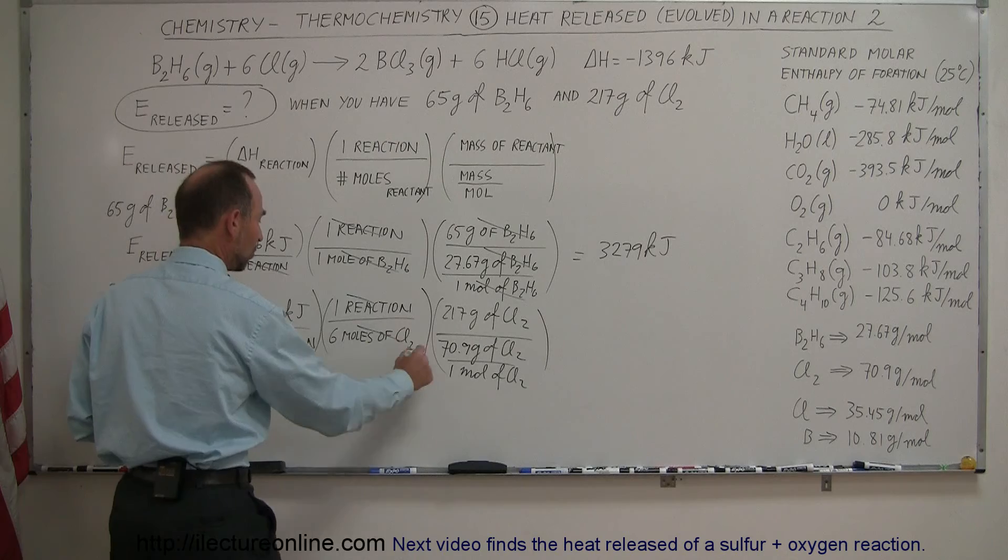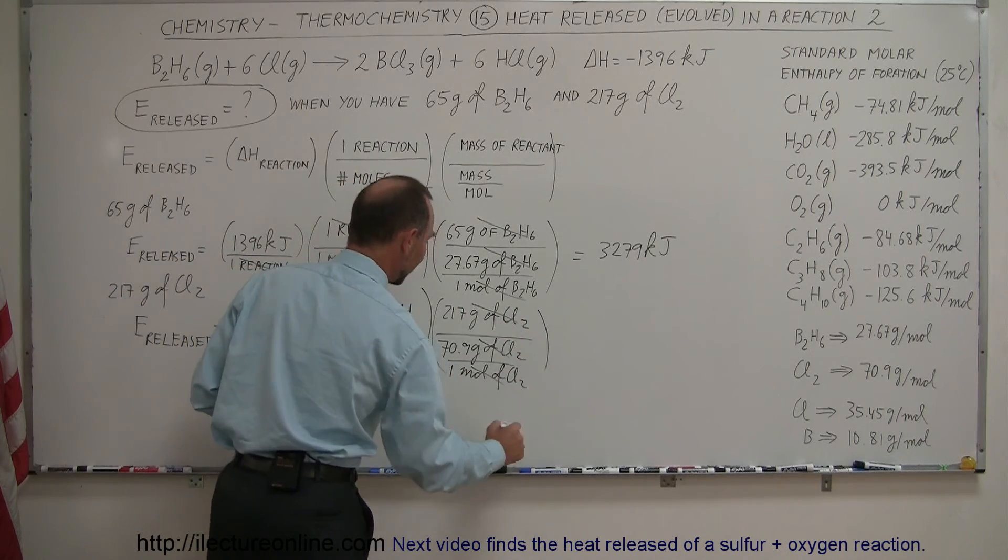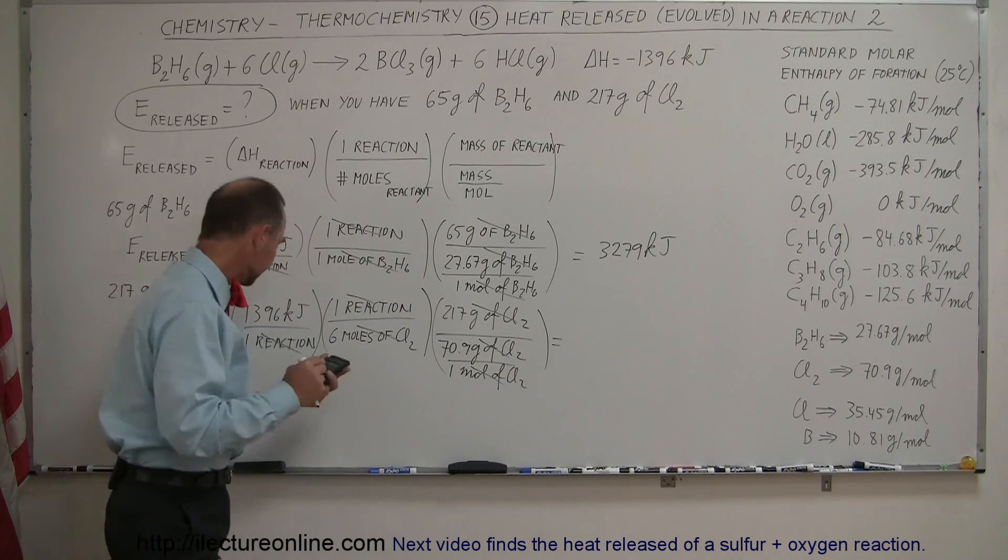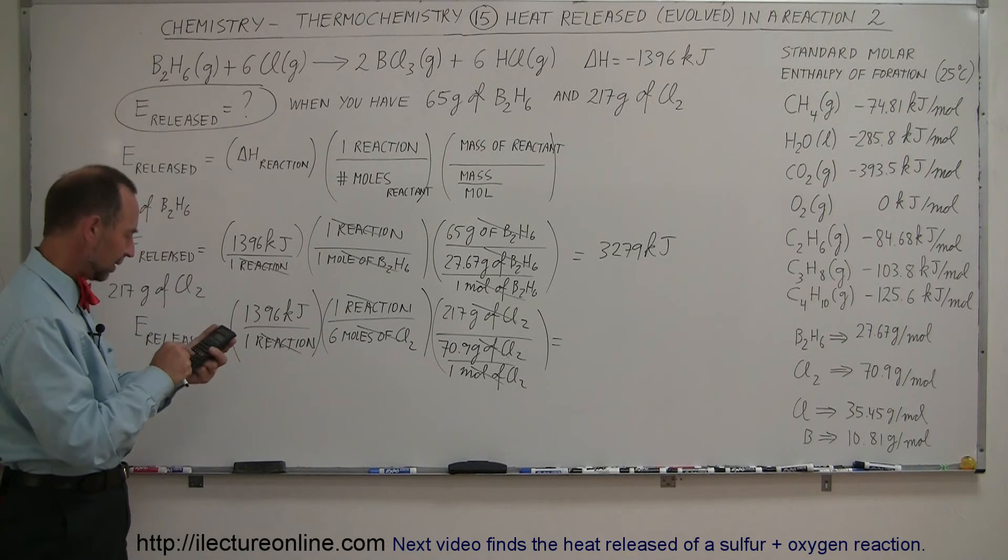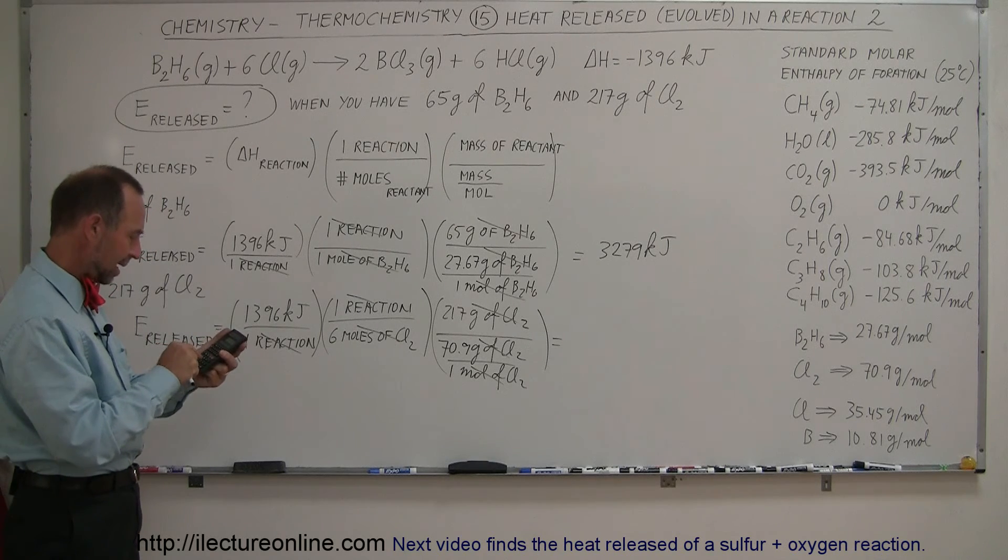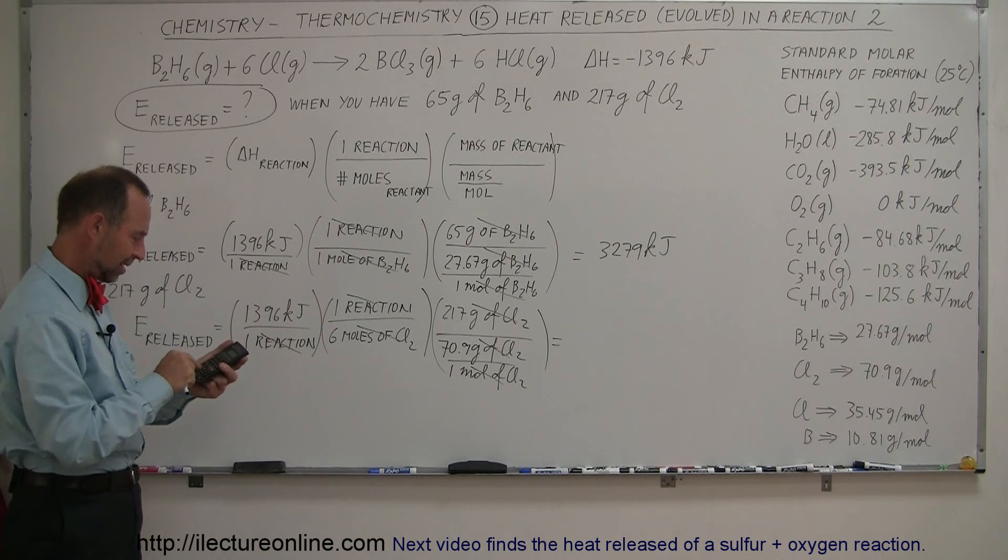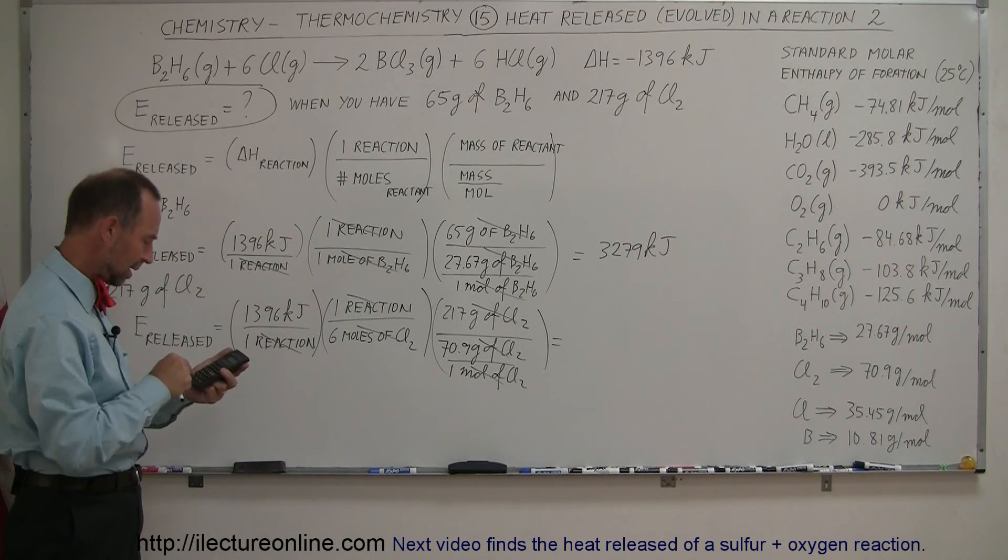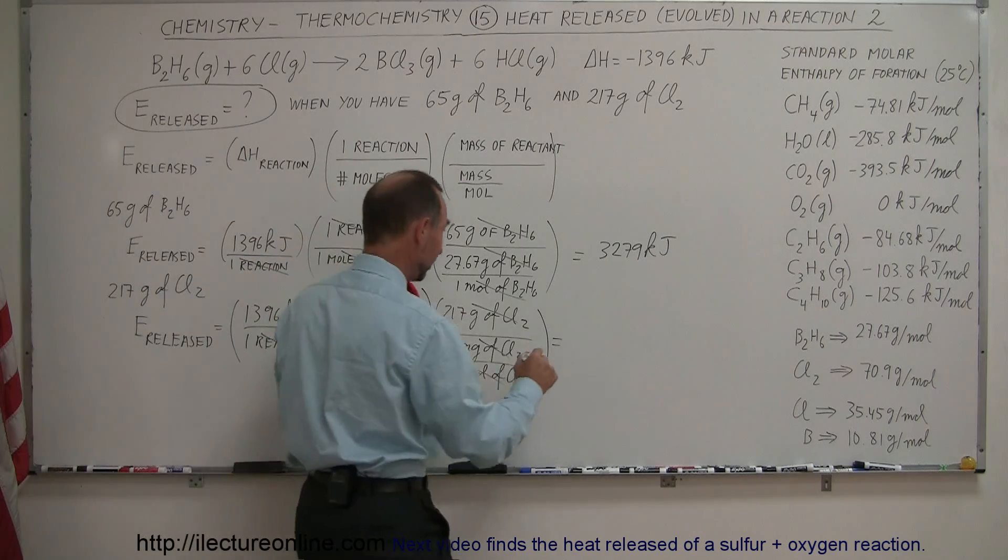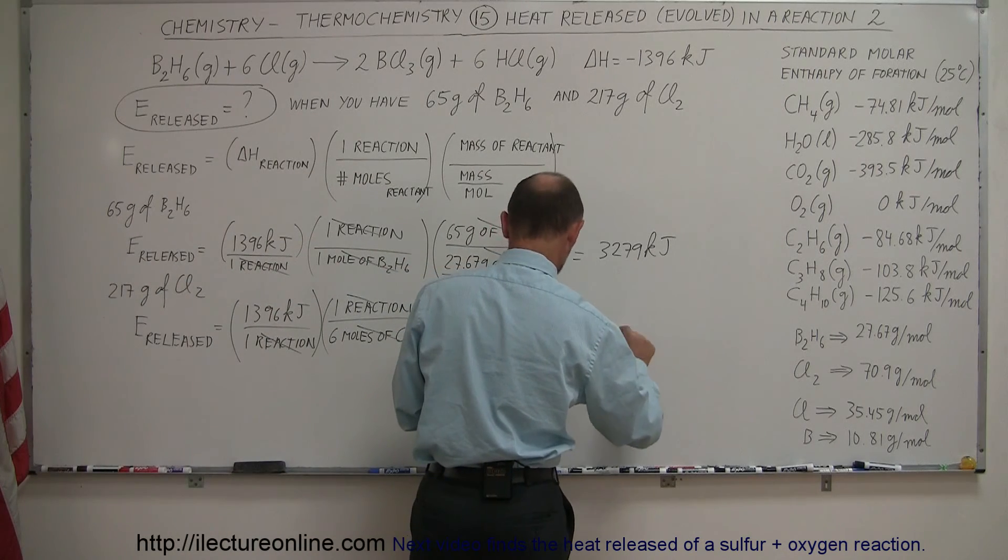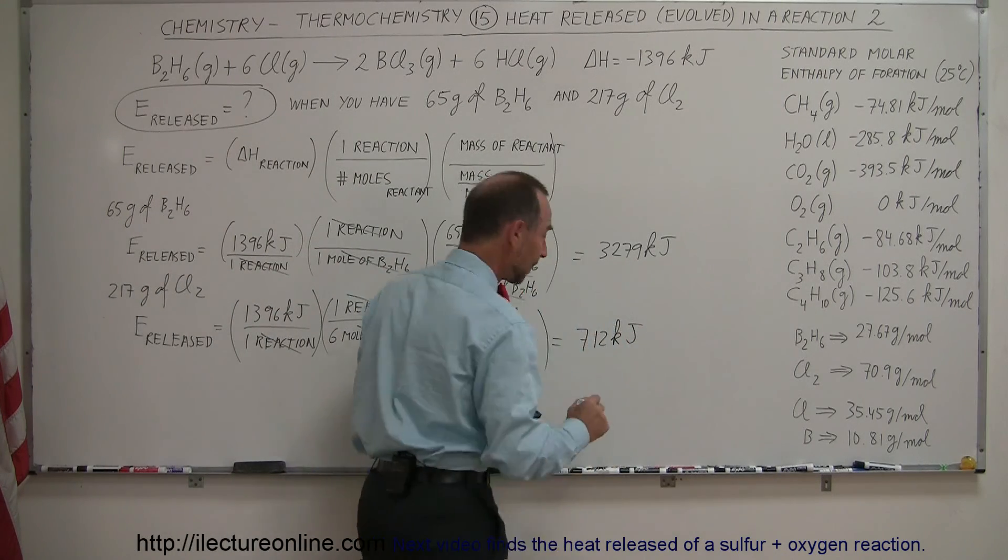Again, the reaction cancels out, moles cancels out, grams cancels out, and we're left with 1,396 times 217 divided by 6 and divided by 70.9 equals, and this releases 712 kilojoules.